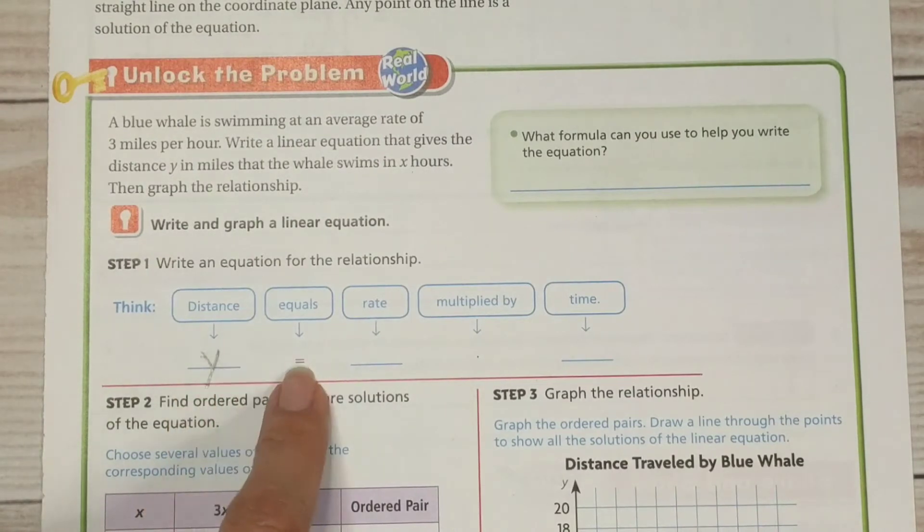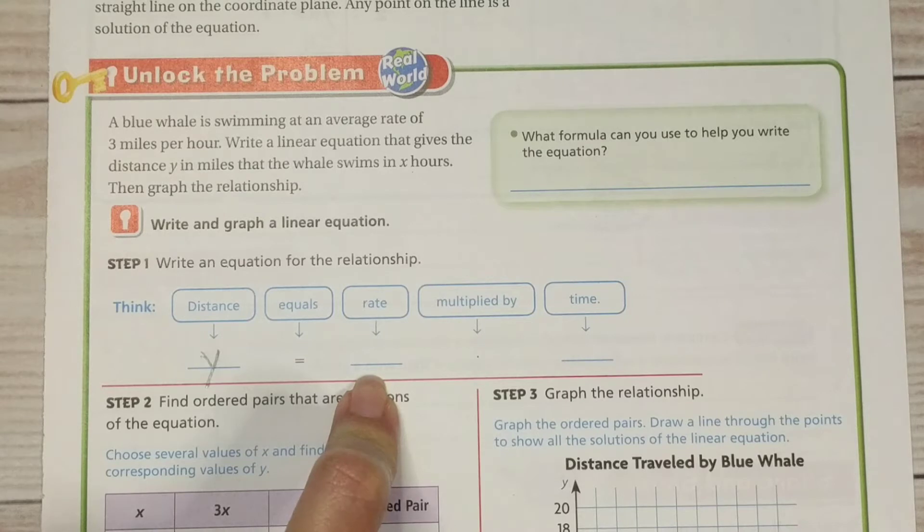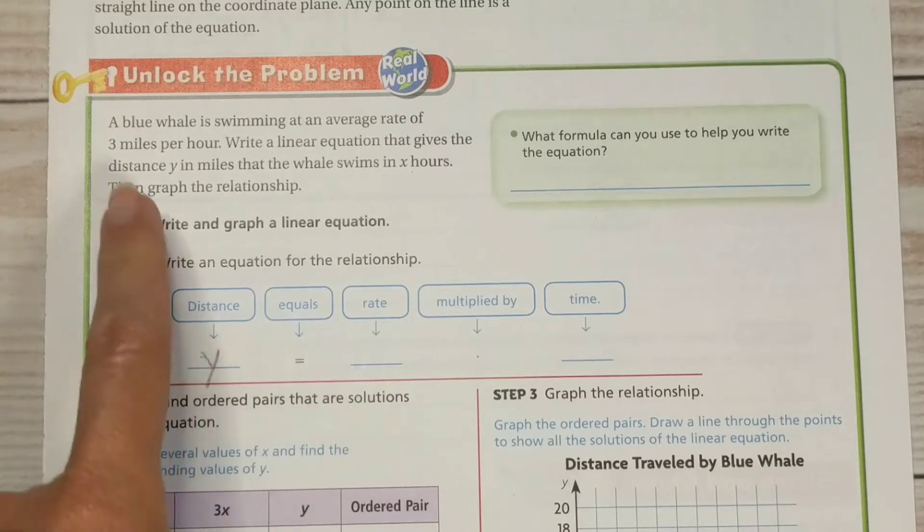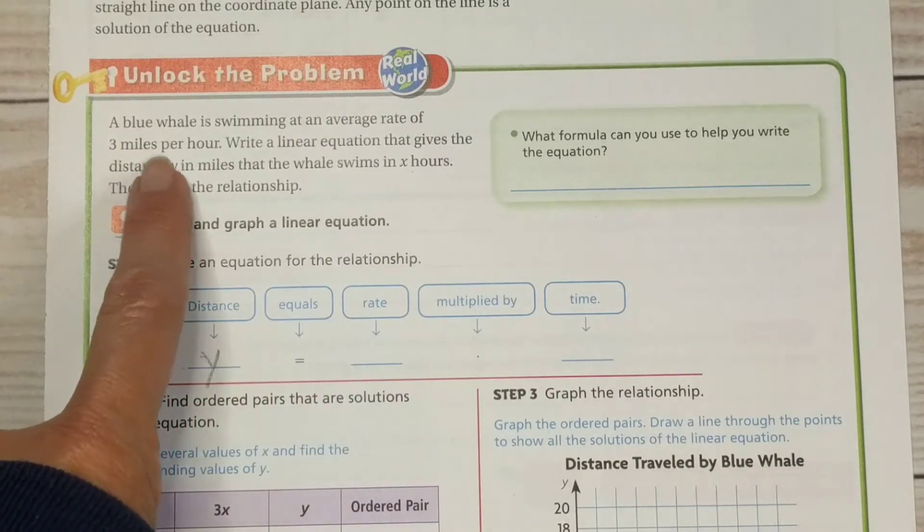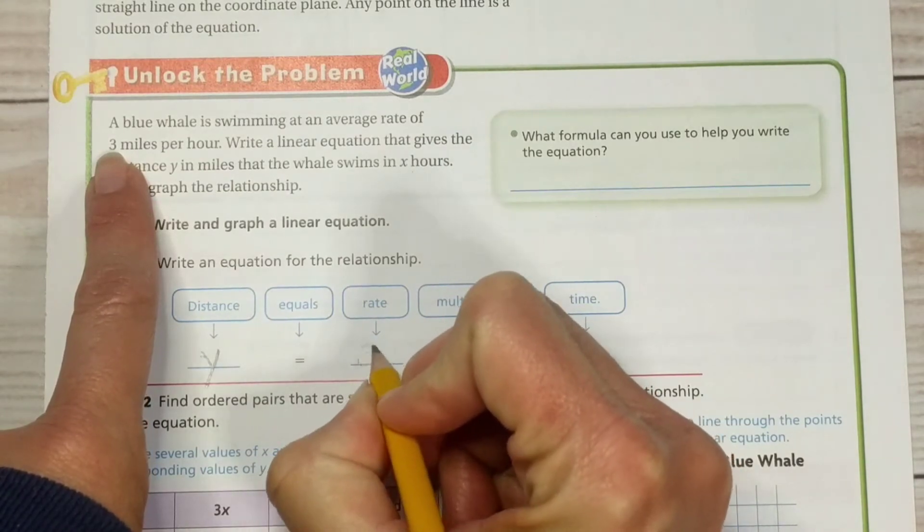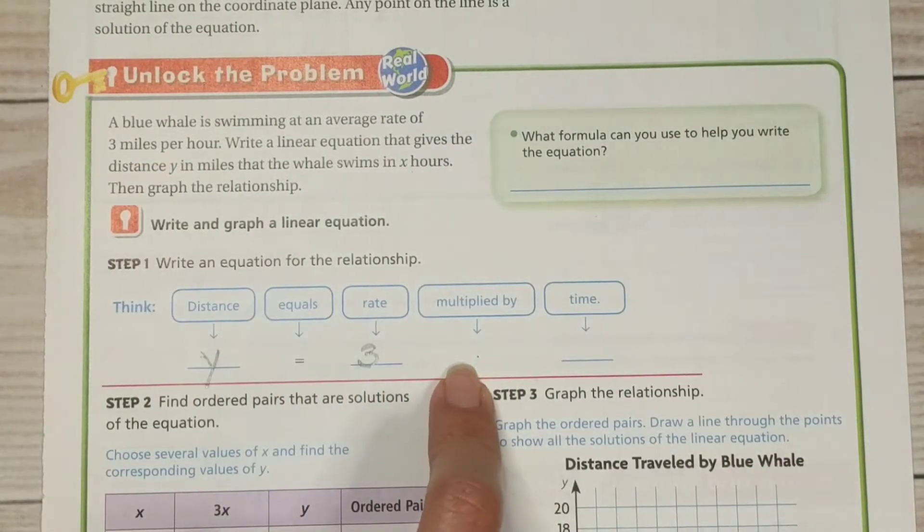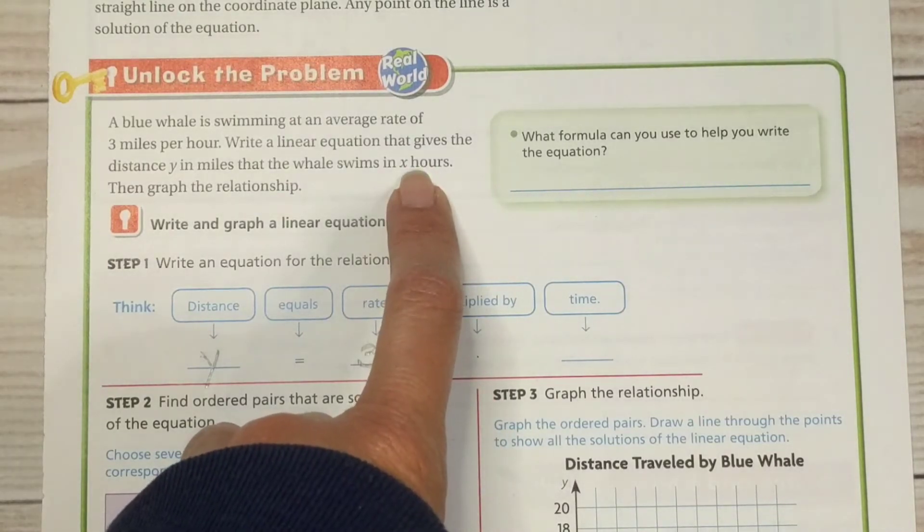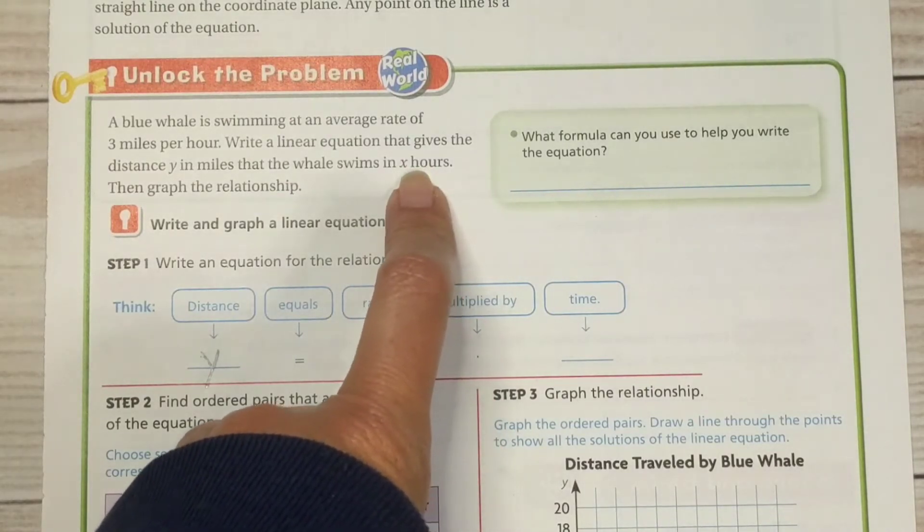All right. Y equals what is our rate? That would be how fast that whale is swimming. And if you look up here, they gave us that information too. It's 3 miles per hour. So we're going to write a 3 there multiplied by time. And again, they gave us that also in the story problem x.